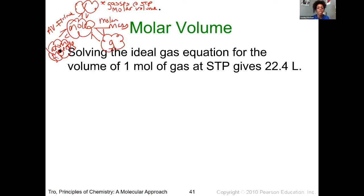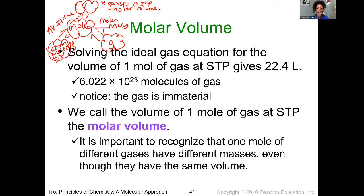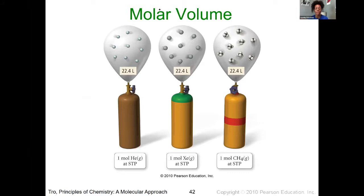When solving the ideal gas calculation for one mole at STP, the volume you're constantly going to get is 22.4 liters. We call the volume of one mole of gas at STP the molar volume. It's important to recognize that one mole of different gases have different masses even though they have the same volume. We can see this pictorially with helium, xenon, and methane gas — regardless of the substance, the volume at STP they occupy is all the same.